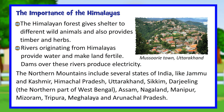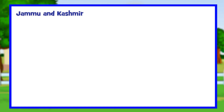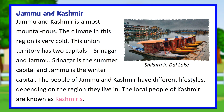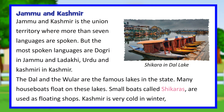The northern mountains include several states of India: Jammu and Kashmir, Himachal Pradesh, Uttarakhand, Sikkim, Darjeeling, the northern part of West Bengal, Assam, Nagaland, Manipur, Mizoram, Tripura, Meghalaya, and Arunachal Pradesh. Jammu and Kashmir is almost entirely mountainous with a very cold climate. This union territory has two capitals — Srinagar, the summer capital, and Jammu, the winter capital. The local people are known as Kashmiris, and more than seven languages are spoken, with Dogri in Jammu and Ladakhi, Urdu, and Kashmiri spoken in Kashmir.